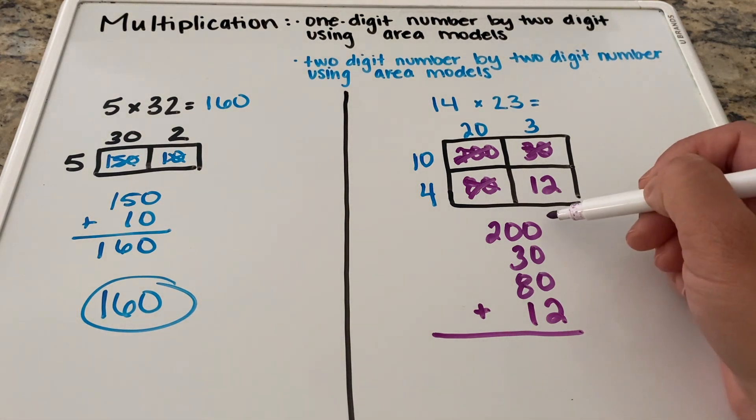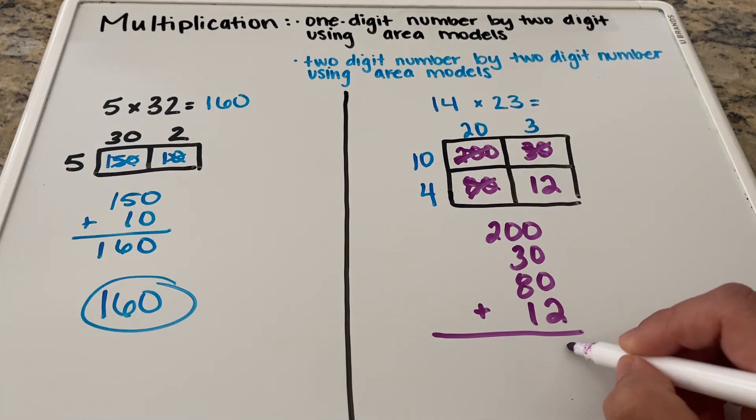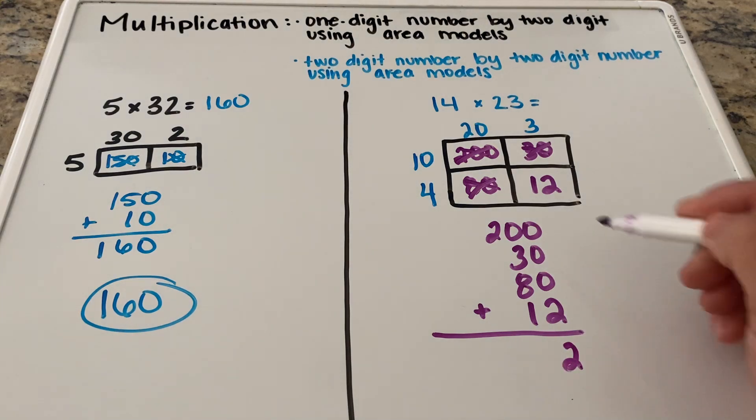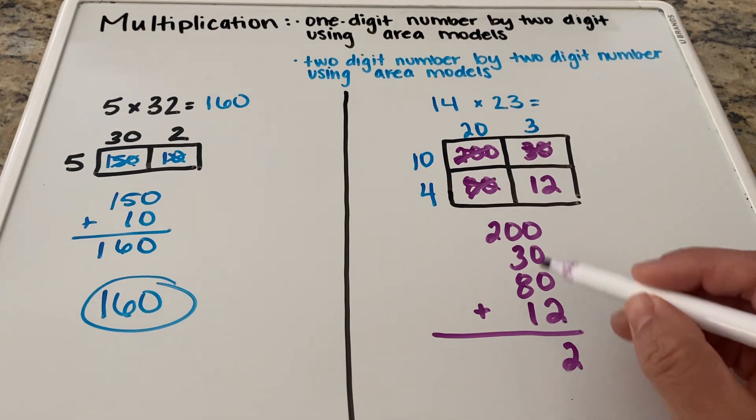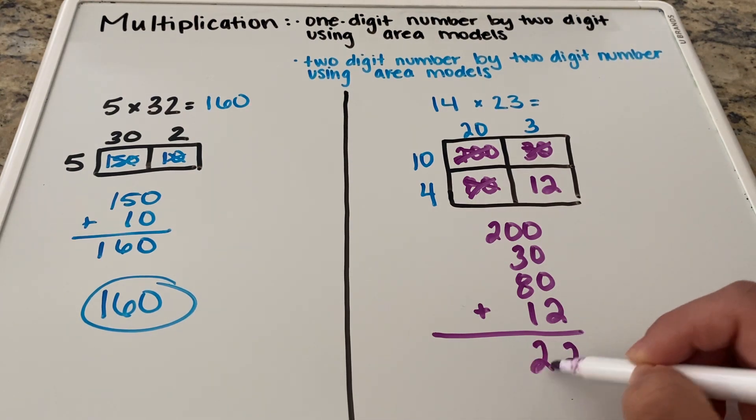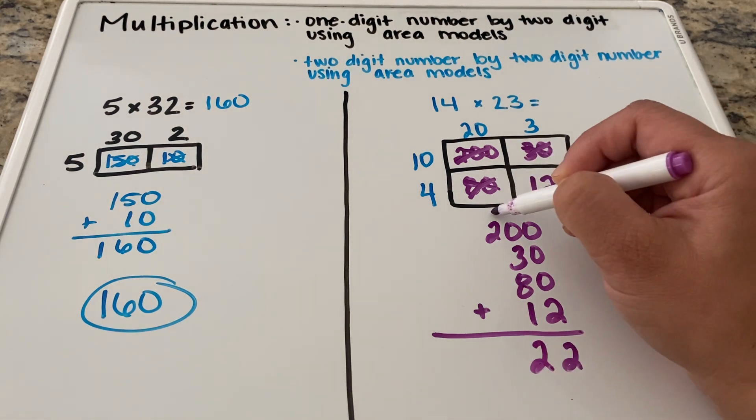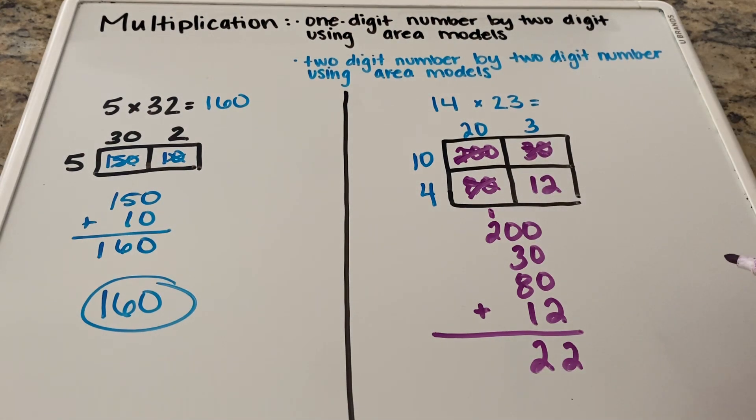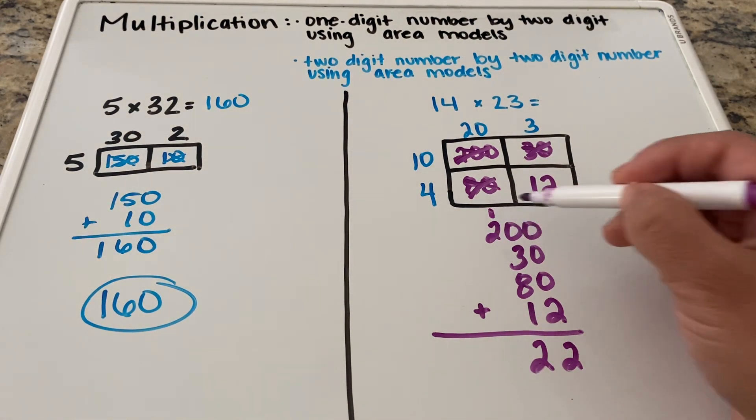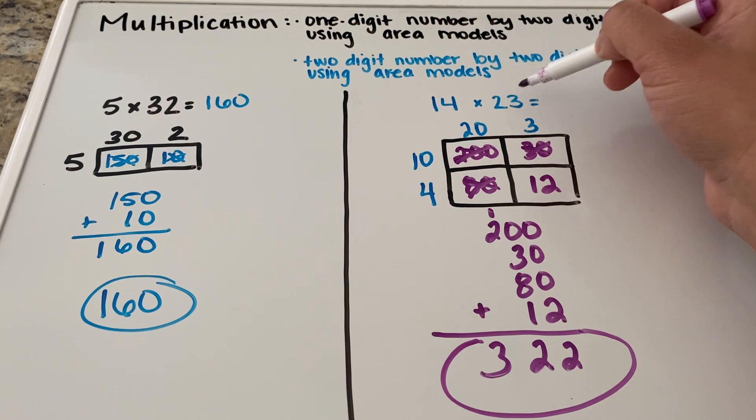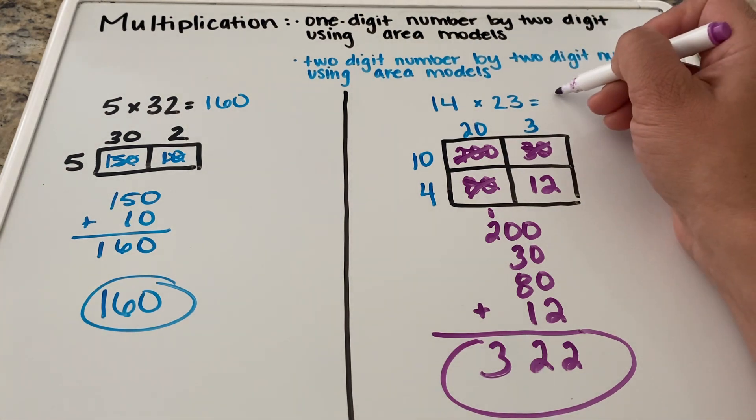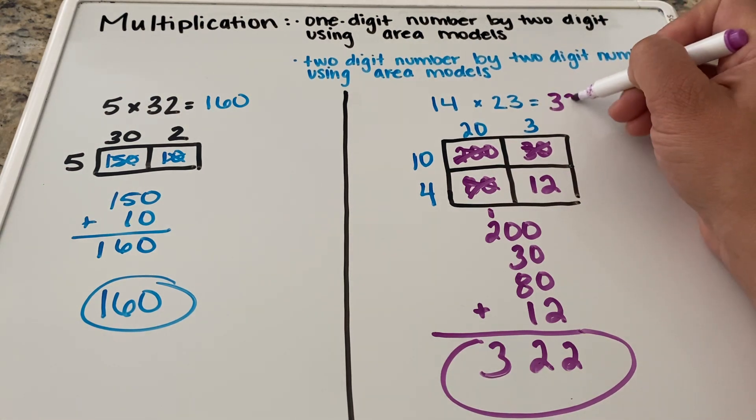From here we are going to add straight down. So 0 plus 0 plus 0 plus 2 is 2. 3 plus 8 plus 1 is 12. 12 is above 9. So we're actually going to put our 2 that's in our ones place down below. And we're going to carry the 1 into our hundreds place. 2 plus 1 is 3. So our answer for 14 times 23 is 322.